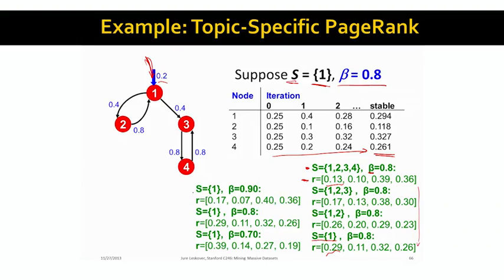Similarly, if I keep the teleport set S constant but change the random jump probability — the teleportation probability — as the parameter beta gets smaller, the score of node 1, the node where the random walker is jumping to, also starts to increase, because more and more often the random walker jumps to node 1.